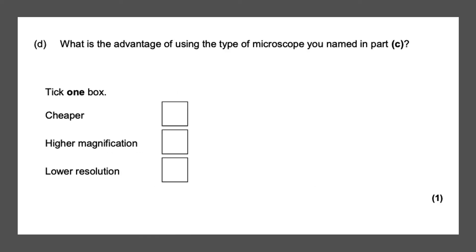Next question. What is the advantage of using the type of microscope you named in part C? So remember we named an electron microscope and now it's asking for an advantage of an electron microscope. So remember the advantages that we discussed in our previous video was that it had a higher magnification and a higher resolution. And the disadvantages were it wasn't portable because it was really big and it would be really expensive. So our answer is clear. It would have a higher magnification and it has a higher resolution, not lower. And that will give you your one mark.